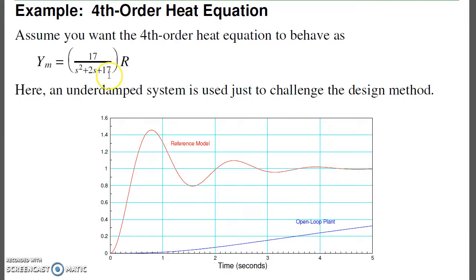You can tell that this is somewhat unreasonable, because if I look at the open loop response, here's what the reference model behaves like, the red line. Here's what the plant, the heat equation, behaves like. Heat equations don't like to oscillate. This one's very slow. I'm trying to speed it up drastically and make it oscillate. If I can do that, I can do just about anything.